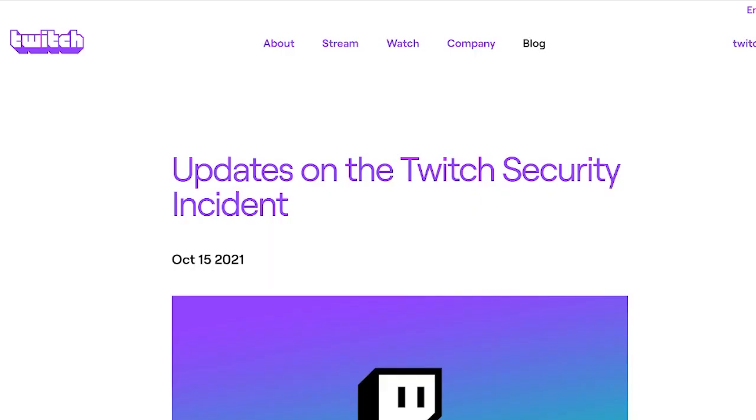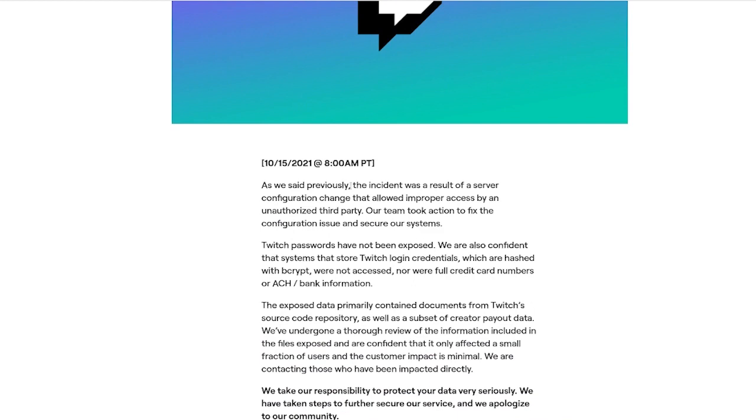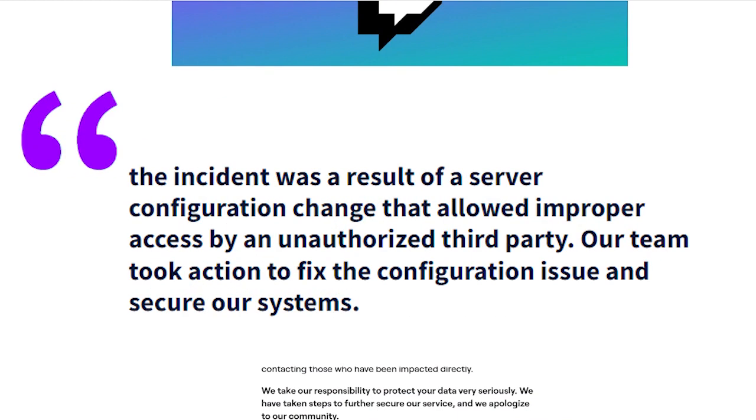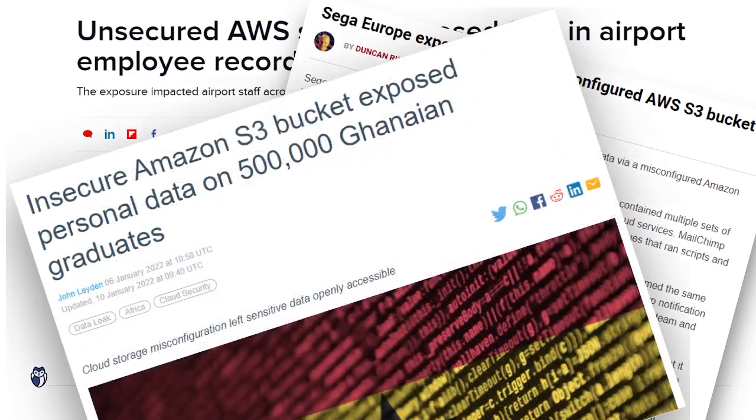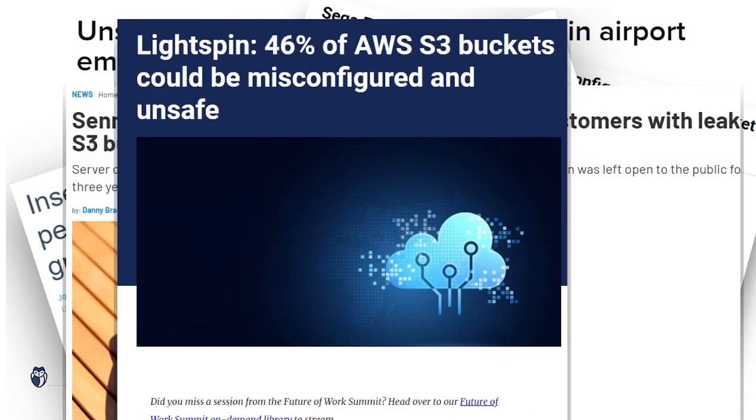So the first part of the story is: how did attackers get access to this information? The only information we have from Twitch is that the incident was a result of a server configuration change that allowed improper access by an unauthorized third party. What we probably can guess is that a server that contained the Git repositories, or a backup of those Git repositories, was inadvertently made public. And someone who was scanning Twitch, or perhaps an internal employee, or even a previous employee, then downloaded that information. Server configuration errors happen all the time — there are endless stories about Amazon S3 buckets accidentally being made public and adversaries finding them. And when you look at source code by its nature, it's a very leaky asset.